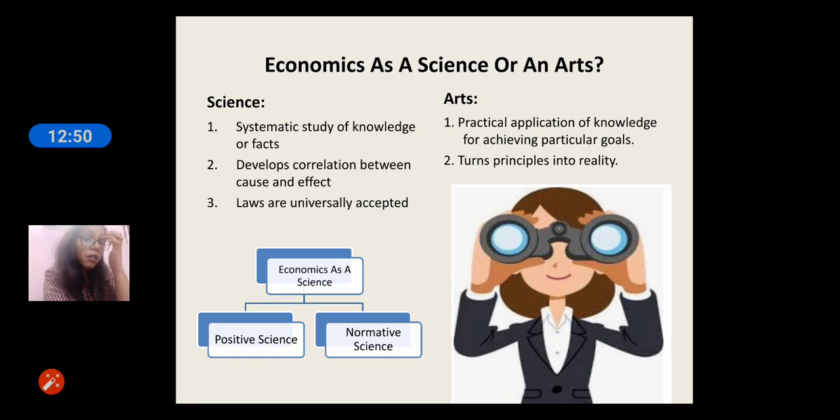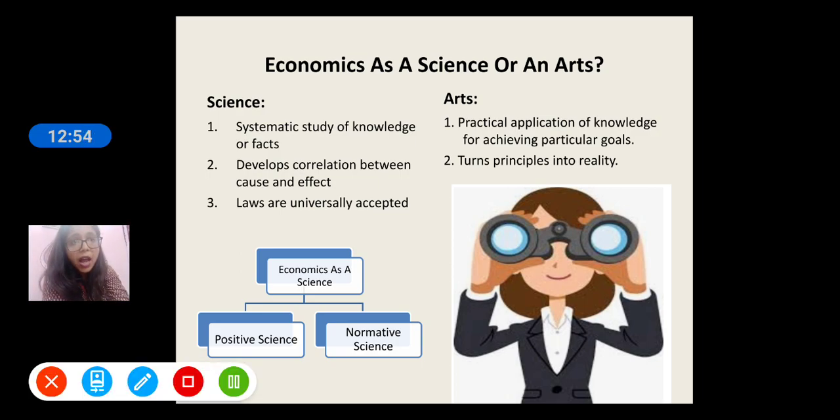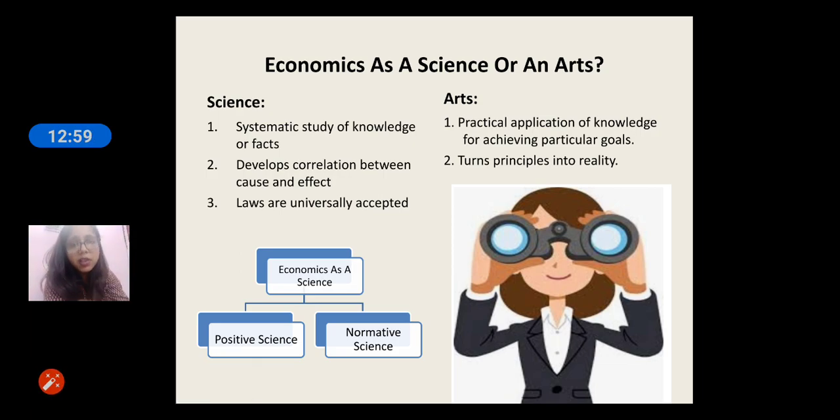Now, this is a very interesting question. When I was a student, I had PCM. I had science. So I took economics as an optional subject. I had this in my mind that why school is offering me economics as an optional subject when I am a science student. But after a few years, I realized that economics can not only be associated with arts or commerce stream, but it is a science as well. So we will understand this. First in order to understand that, we need to see what are the characteristics of science and what are the characteristics of arts. And we will see if economics can be considered as both science and arts. So in science we have systematic study of knowledge and facts. In science we also develop correlation between cause and effect. We see which is the cause. We do experiments and see what was the cause and what is the effect. Third, laws are also universally accepted in science. For example, Newton's law of motion. The laws of science are universally accepted.